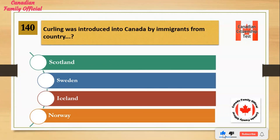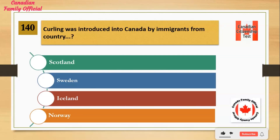Curling was introduced into Canada by immigrants from which country? Number 1: Scotland. Number 2: Sweden. Number 3: Iceland. Number 4: Norway. And the answer is Scotland.